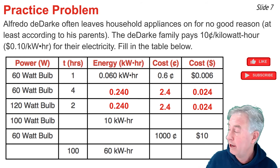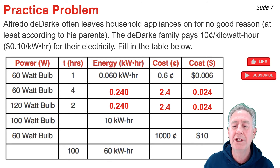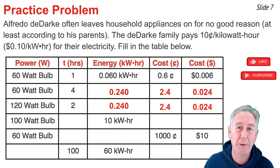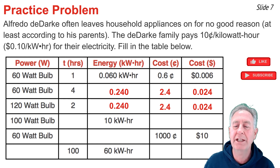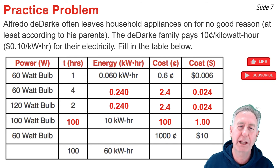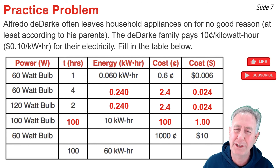In row 4, given the power and energy, we calculate time. Time equals energy divided by power. Taking 10 kilowatt-hours divided by 0.10 kilowatts (a 100-watt bulb) gives a time of 100 hours. For cost: 10 kilowatt-hours times 10 cents per kilowatt-hour equals 100 cents, or one dollar.